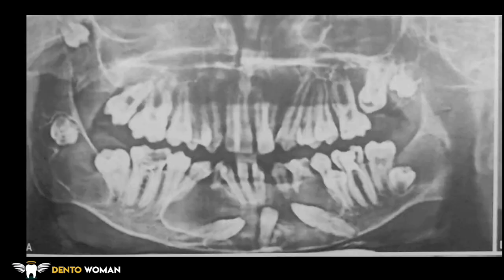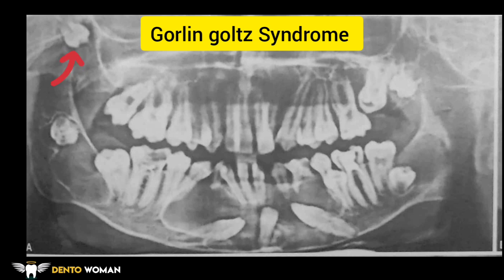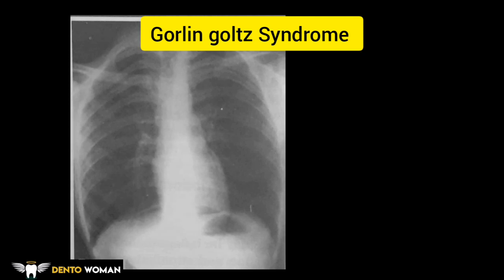This is a radiographic image of Gorlin-Goltz syndrome where multiple KCOTs are found. This panoramic view shows multiple well-corticated radiolucencies in the bilateral parasymphyseal region of the mandible and angle of mandible with minimal expansion. You can also see bilaterally displaced lower canines to the lower border of the mandible, an impacted tooth is noted in the right maxillary region with increased follicular space. The chest X-ray shows bifid right fourth and left third rib.